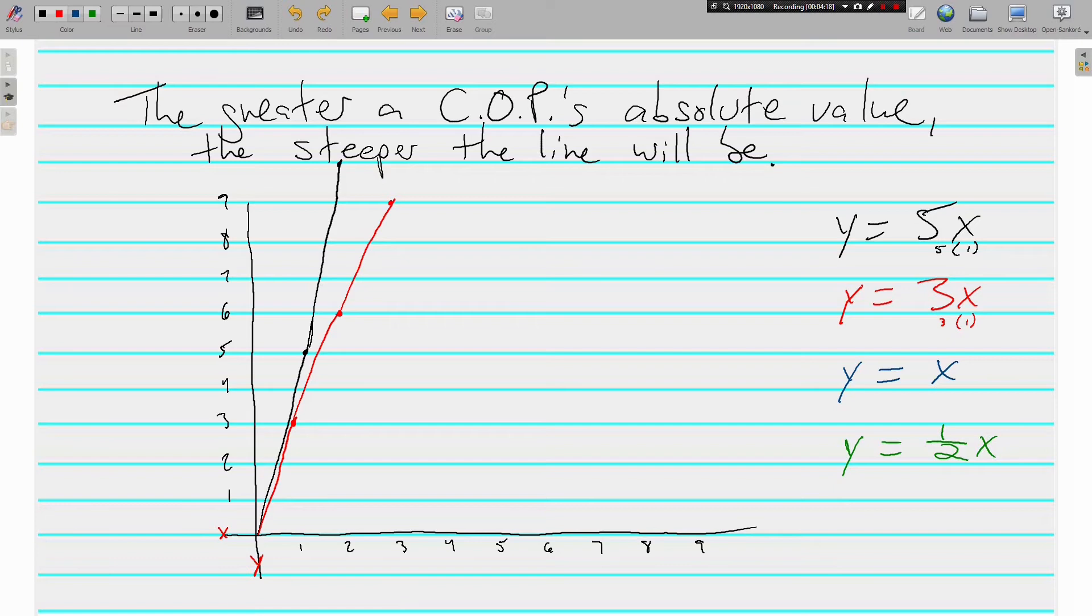Y equals x. Remember, this has a constant of proportionality of 1. So if I plug 1 in for x, I get 1. If I plug 2 in for x, I get 2. 3 for 3, and so on. That's supposed to be straight.